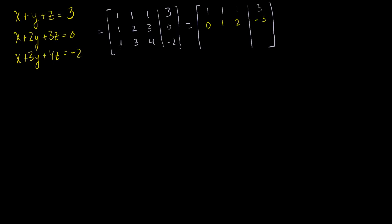Now I want to also zero out the third row's first entry. Replacing it with the third row minus the first row: 1 minus 1 is 0, 3 minus 1 is 2, 4 minus 1 is 3, and minus 2 minus 3 is minus 5. I now have pivot entries in the first and second rows, with the second pivot to the right of the first — which is what I want for reduced row echelon form. Now I need to target the other entries in those columns and zero them out.